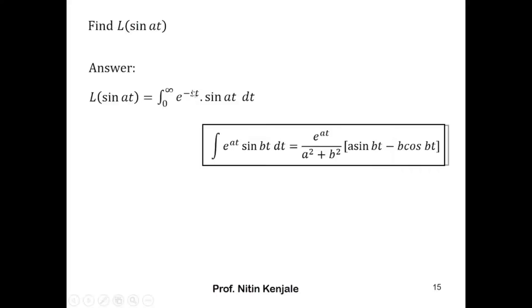In our case here, a is minus s and b is a. So replace every a in this formula by minus s and b by a, so that we get the value of this integral is e raised to minus st upon s squared plus a squared into minus s sine at minus a cos at, with limits zero to infinity.